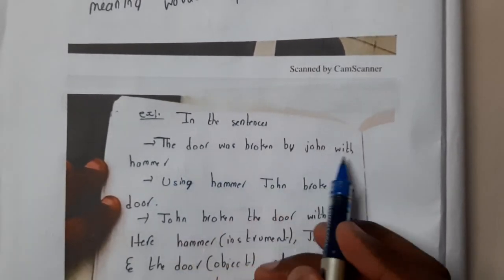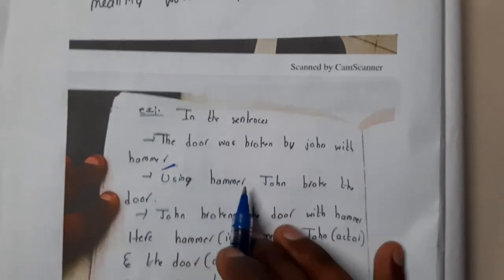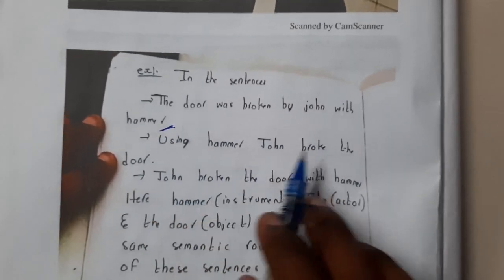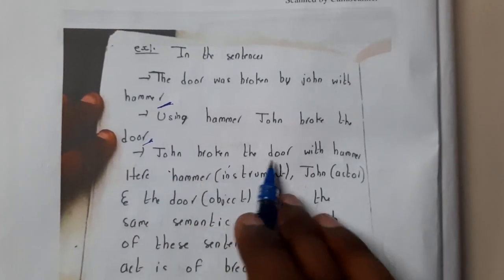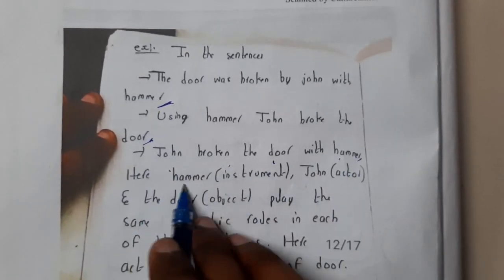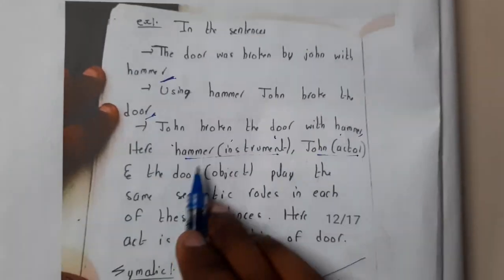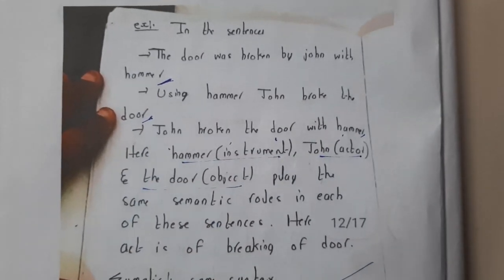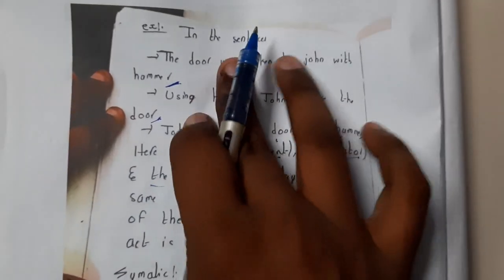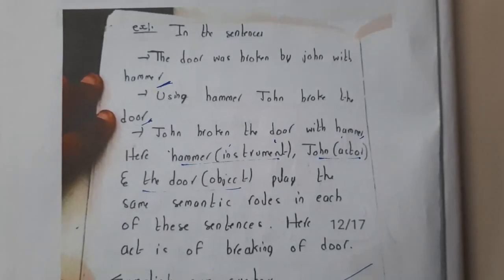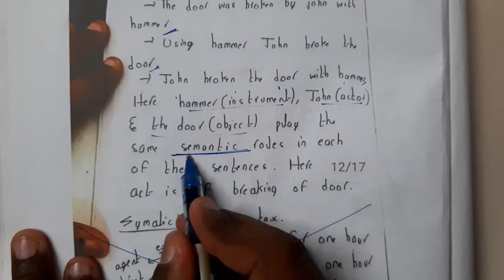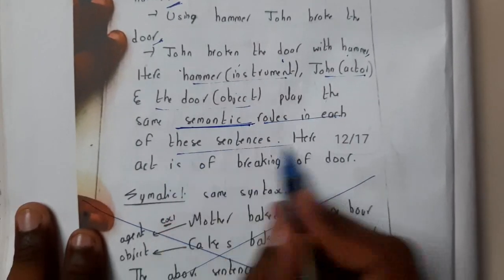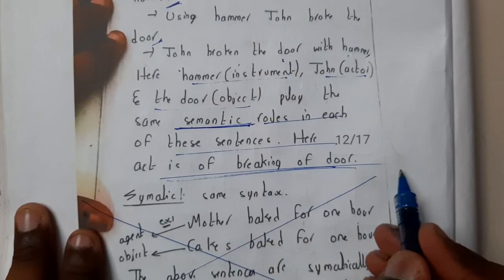For example: 'The door was broken by John with a hammer,' 'He broke the door with a hammer,' and 'Using a hammer, John broke the door' — all three sentences give the same meaning. Here, hammer is the instrument, John is the actor, and the door is the object. Both statements are semantically the same whereas they are syntactically different.